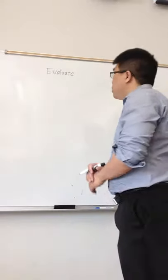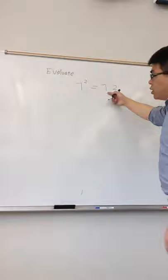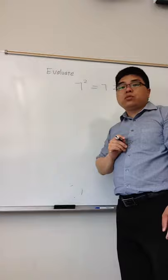So, today I want to talk about what is 7 squared. And I saw many of you write 7 squared as 7 times 2, with 7 times 2 equal to 14. And it turned out to be that it's not right.